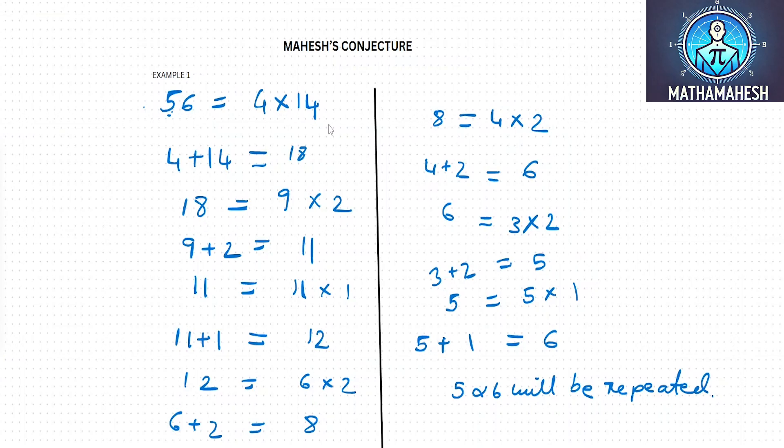8 can be factored as 4 into 2. On adding 4 and 2, we get 6. 6 can be factored as 3 into 2. 3 plus 2 is 5. 5 being a prime number, 5 can be factored as 5 into 1. Now 5 plus 1 is equal to 6.